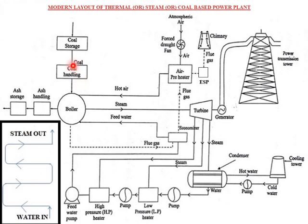The coal moves through conveyors with a metal detector to remove metal particles. The coal is then fed into the bottom portion of the boiler for proper combustion. Hot air is supplied to the boiler. When the coal is burned, flue gas is generated. The hot air enables complete combustion, and the flue gas is produced as a result.